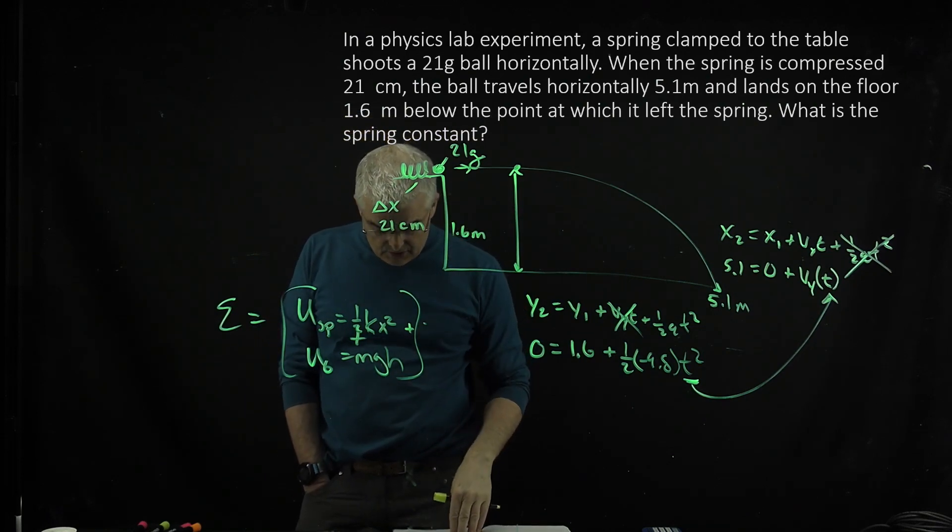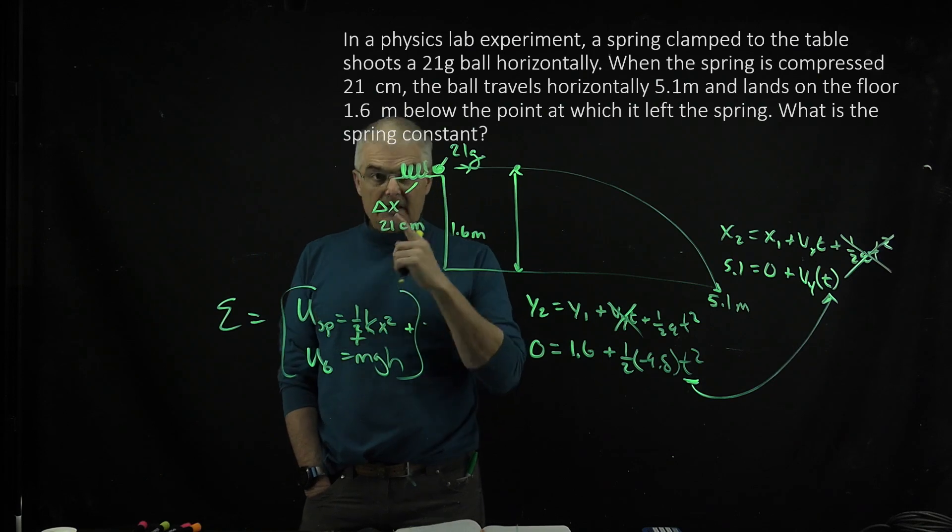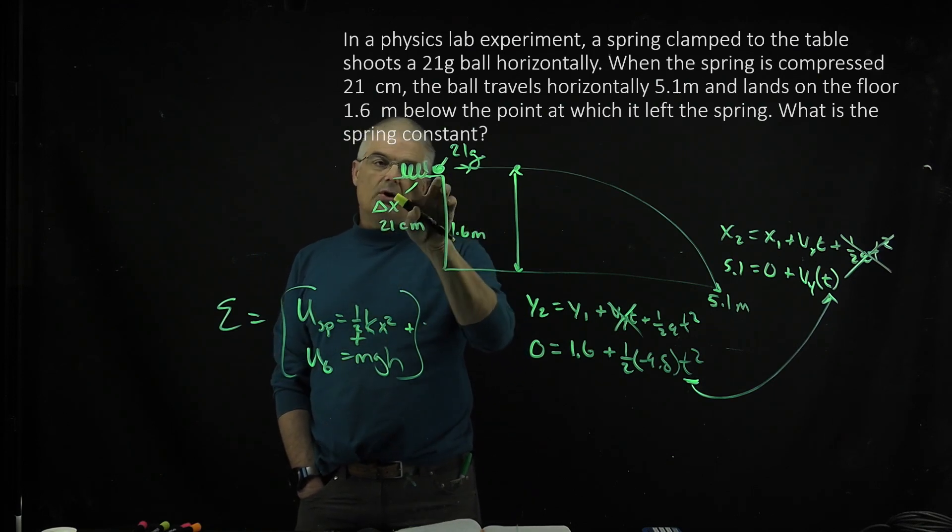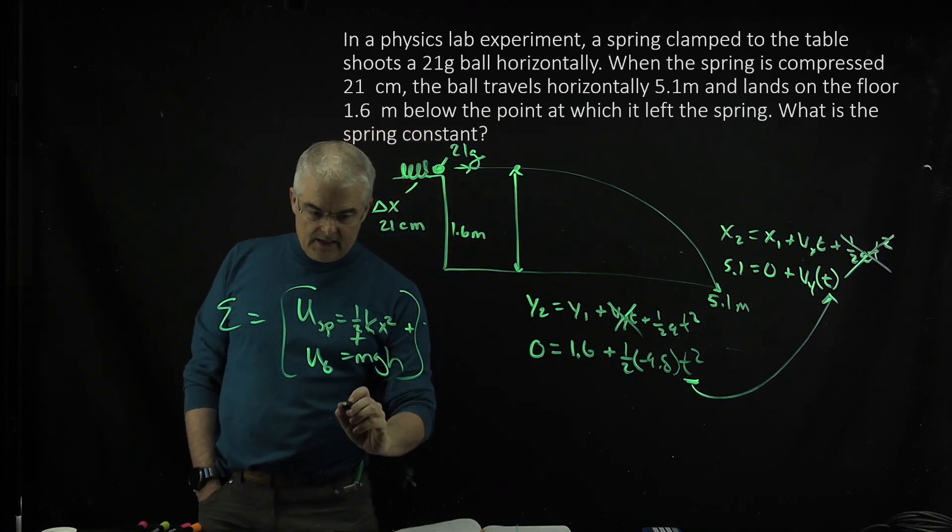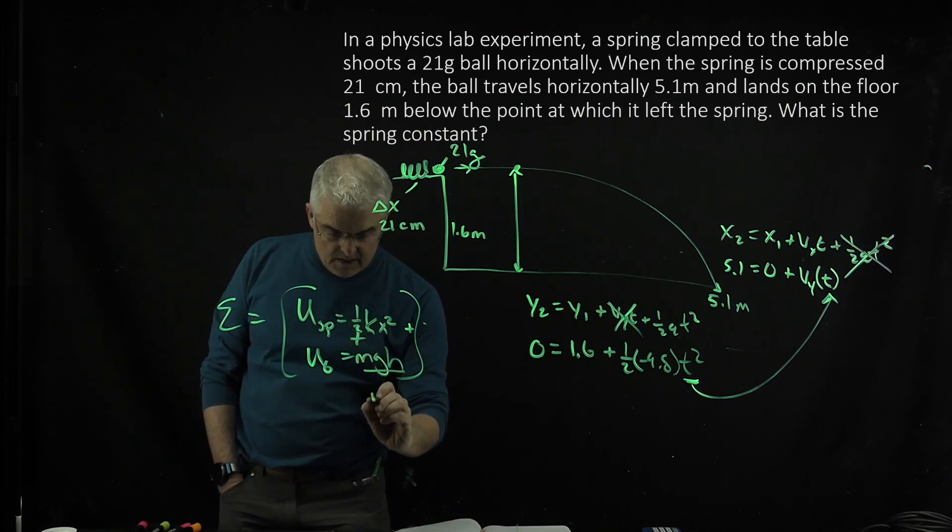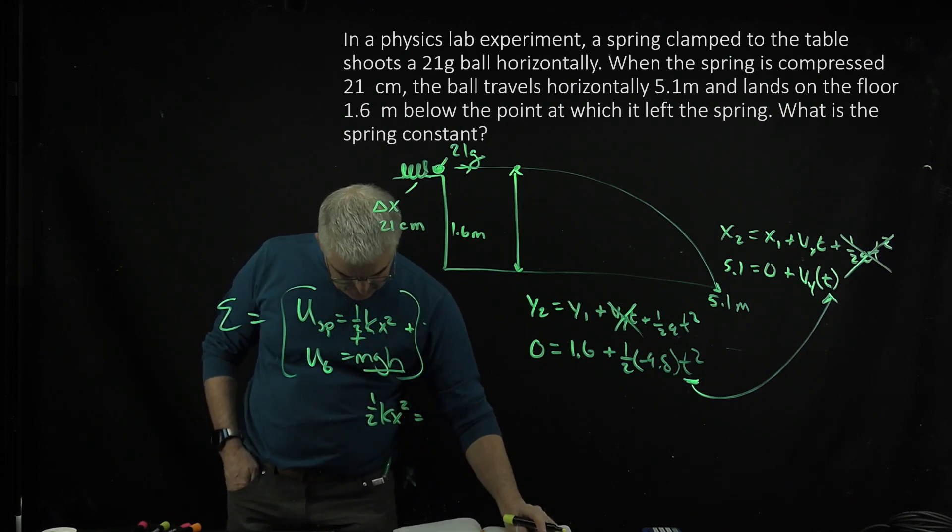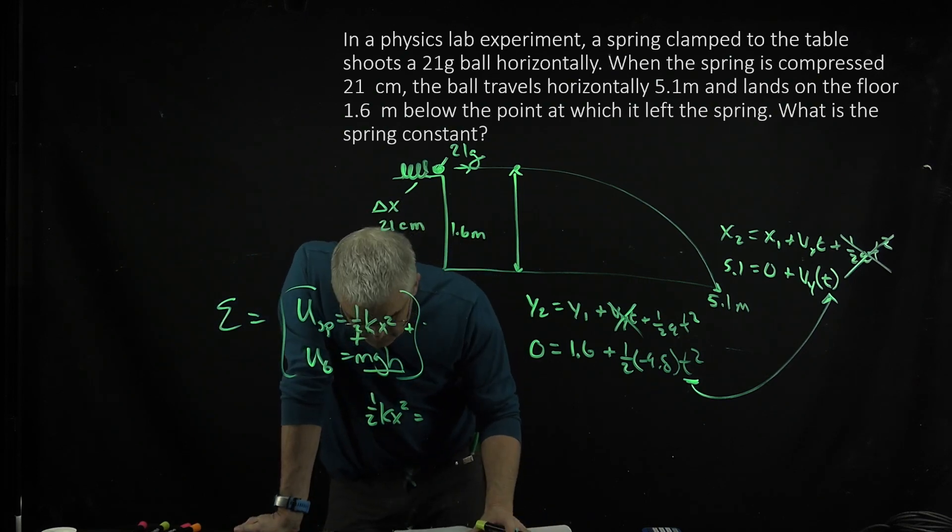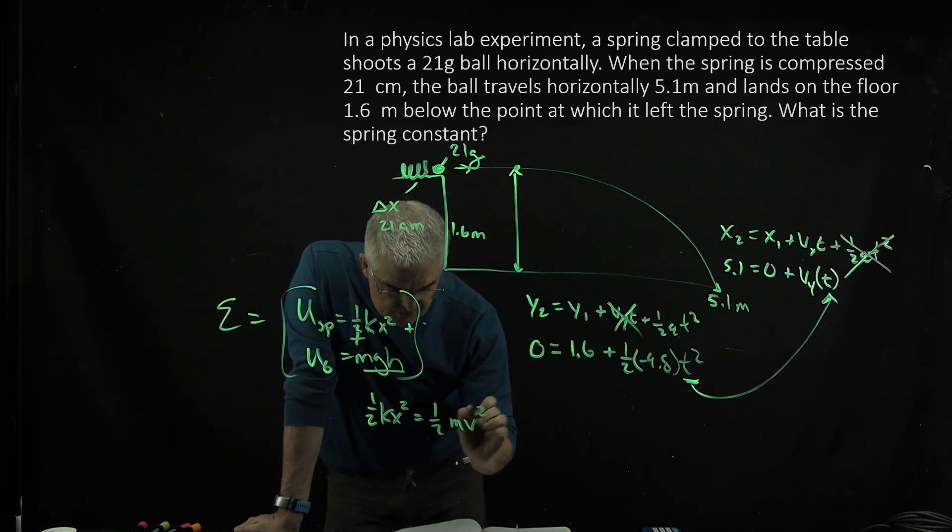So then what I did to solve the problem is I just said, it has no kinetic energy at this point, so all of the spring energy got converted into kinetic energy. So what I can say is 1/2 kx² = 1/2 mv².